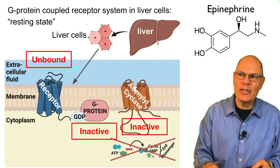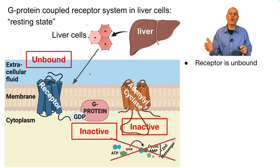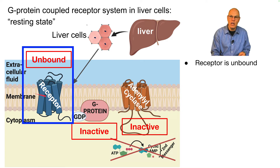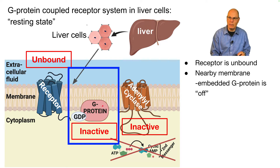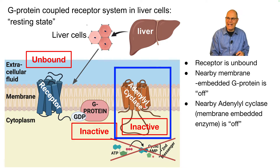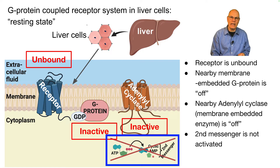The question is: how does epinephrine get liver cells to bring about this response? We're looking at the off state, before epinephrine is released. The receptor is unbound — there's no epinephrine in the system. There's a nearby membrane protein called a G protein, which is not a receptor. It's a membrane-embedded protein that can oscillate between two states; right now it's off and inactive. Nearby is a membrane-embedded enzyme called adenylyl cyclase, also in the off state, and as a result it's not activating the second messenger.